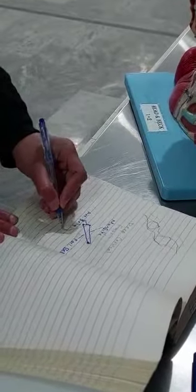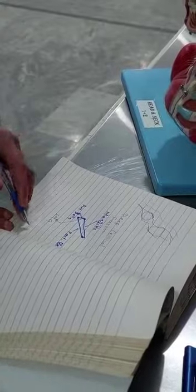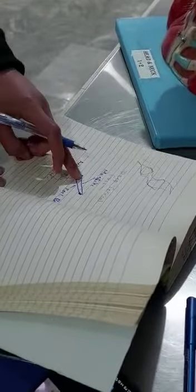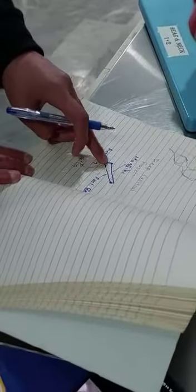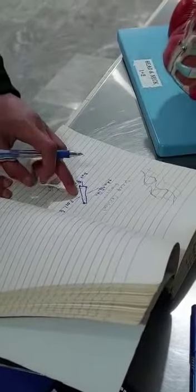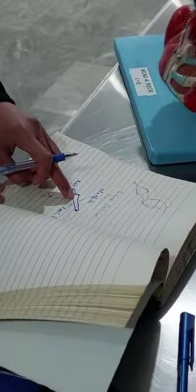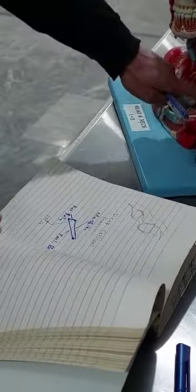There are lymph nodes with the hypoglossal nerve. This is the tongue, which is medial. There are hypoglossal nerve and facial arteries. There are internal carotid arteries, the same for the internal carotid arteries.